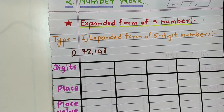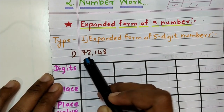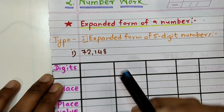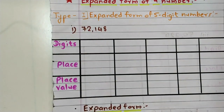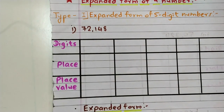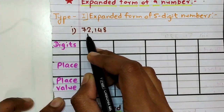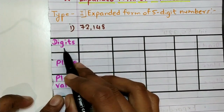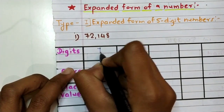72148 is read as seventy-two thousand one hundred and forty-eight. To create the expanded form, firstly we find the place value. The given number is a five-digit number, so here we write the digits: first digit is seven, second digit is two.